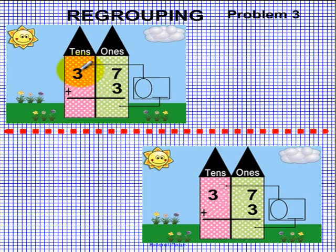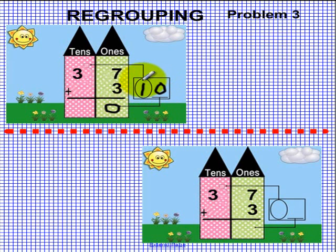We have three tens — one, two, three — and seven ones plus three ones. Seven and three is how much? Ten. So we have one ten which goes in the balloon, and how many ones do we have? Zero. The zero goes in the elevator, goes over to the left, and goes right here. The balloon goes up all the way to the left. Now we have four tens — one, two, three, four. The answer is forty: thirty-seven plus three is forty. Hopefully yours looks just like ours — nice job!